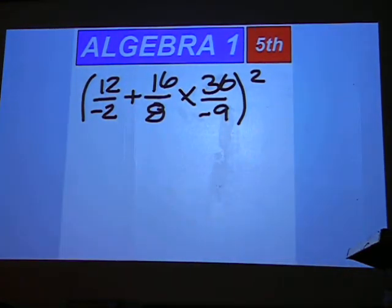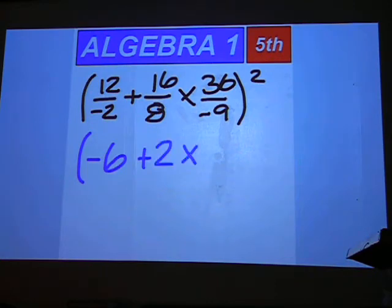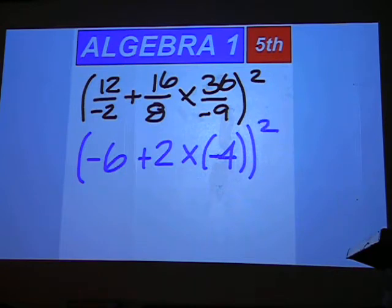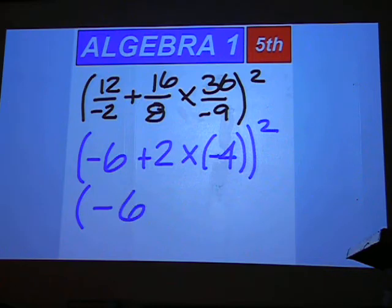Simplify inside the parentheses first to get negative 6 plus 2 times a negative 4. Then simplify again inside the parentheses following order of operations. 2 times a negative 4 is a negative 8.